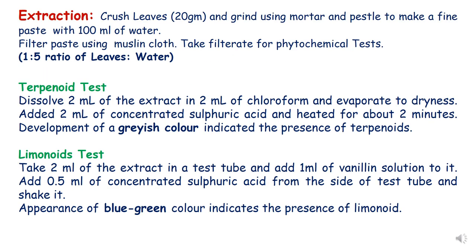For extraction, crush the leaves in distilled water in a ratio of 1 to 5, then filter the paste and take the filtrate for phytochemical tests. For the terpenoid test, dissolve 2 ml of the extract in 2 ml of chloroform and evaporate to dryness with the help of a spirit lamp. Then add 2 ml of concentrated sulfuric acid and heat for about 2 minutes. Development of a grayish color indicates the presence of terpenoids.